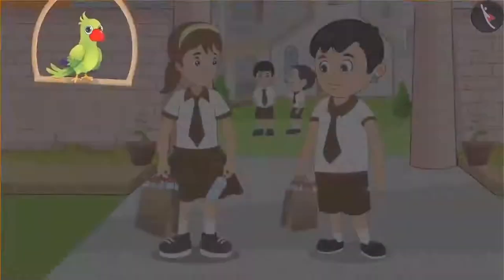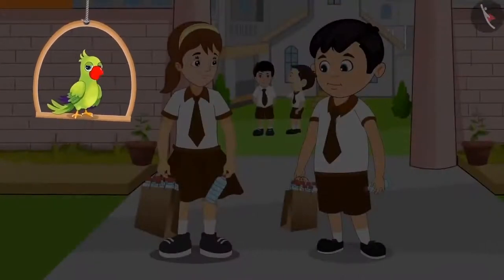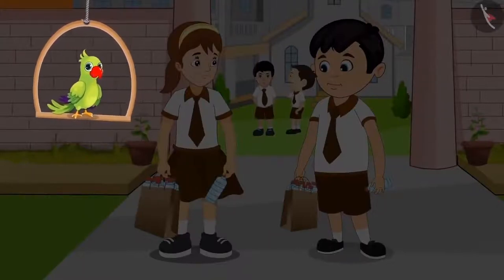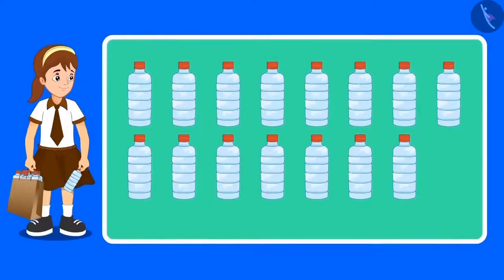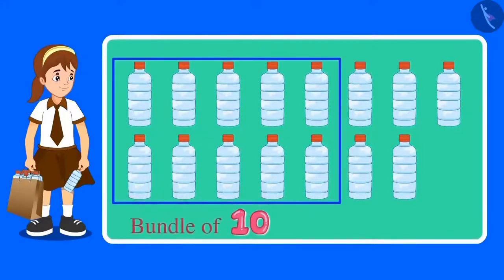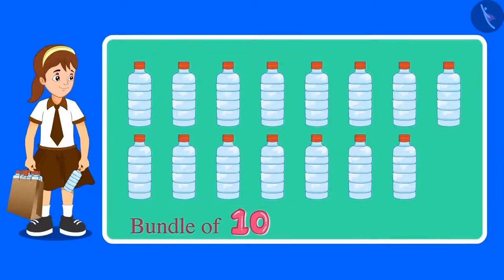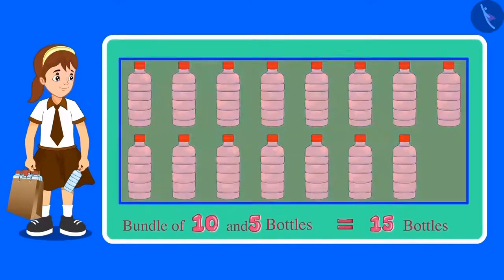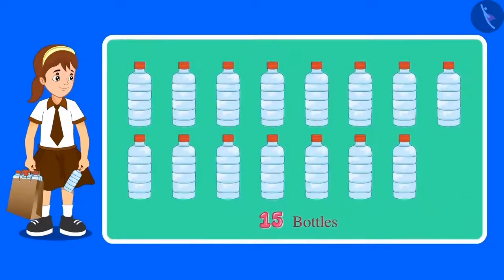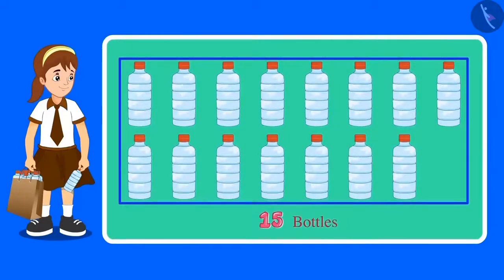Come on, now let us go to Chotu and Aarti's school. A cleanliness drive is being carried out at their school today. Chotu and Aarti have been assigned the job of collecting plastic bottles from their school and surrounding areas. Let us count the number of bottles Aarti has collected. These are 10 bottles — that is one bundle of 10 — and there are 5 more bottles. So a bundle of 10 and 5 are 15 bottles. Aarti has collected a total of 15 bottles.